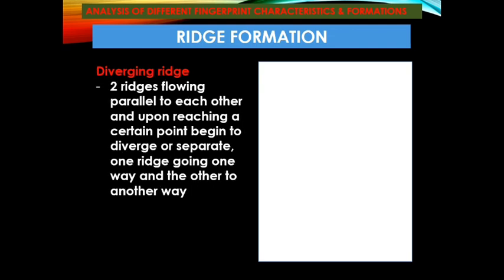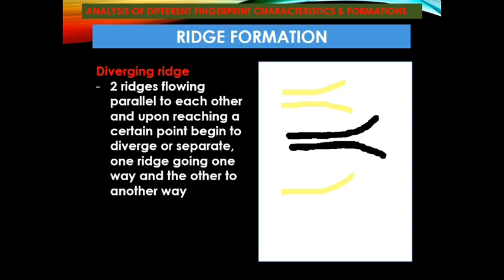Next is the diverging ridge — two ridges that flow parallel to each other, and upon reaching a particular point, they begin to diverge or separate, with one ridge going one way and the other going the opposite direction.